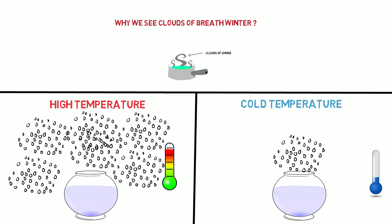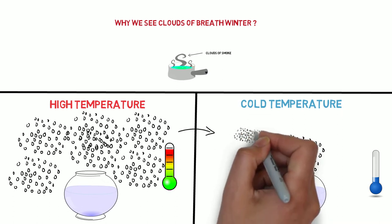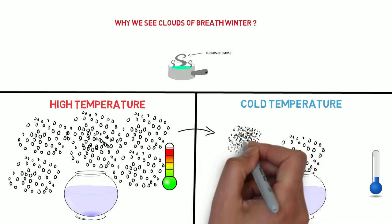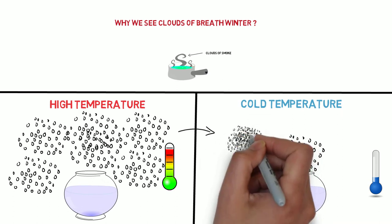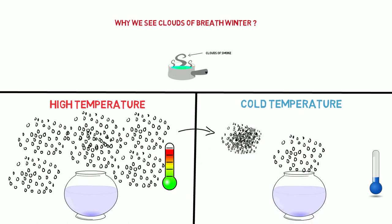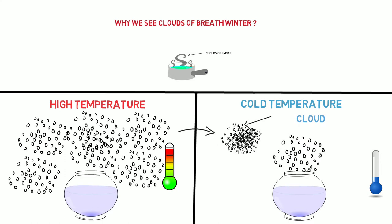So when air of a higher temperature moves suddenly to a cool region, the temperature falls below the dew point, causing the moisture particles to condense quickly into liquid. And that is how a cloud appears.